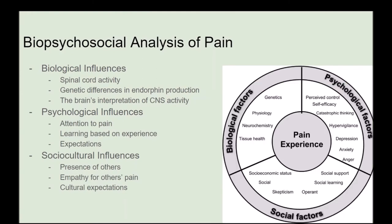When talking about pain, we want to consider the biopsychosocial analysis. Biological influences include spinal cord activity, genetic differences in endorphin production, and the brain's interpretation of central nervous system activity. Psychological influences include attention to pain, learning based on experience, and expectations. Social-cultural influences include the presence of others, empathy for others' pain, and cultural expectations.